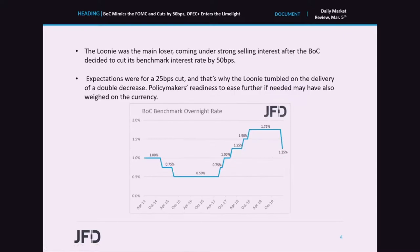The Loonie was the main loser among the G10s, coming under strong selling interest after the Bank of Canada decided to cut its benchmark interest rate by 50 basis points, bringing it down to 1.25%, mimicking the Fed's 50 basis point cut. Officials noted that the coronavirus is a material negative shock to the Canadian and global economic outlooks, and added that they remain ready to ease further if needed. Expectations had been for a 25 basis points cut at this meeting, which is why the Loonie tumbled on the delivery of a double decrease. Officials' readiness to ease further if needed may have also weighed on the currency.